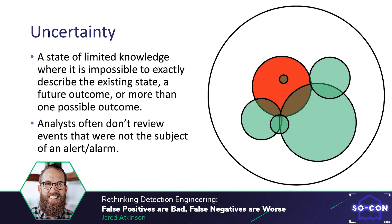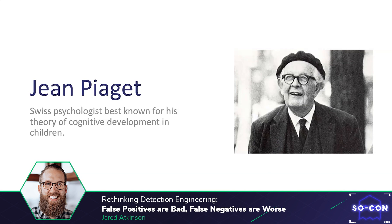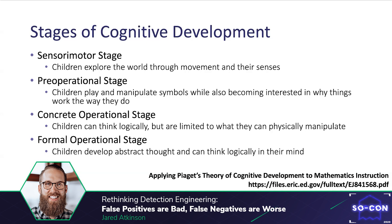While pondering how to solve the inherent uncertainty in detection work, I was introduced to a famous psychologist named Jean Piaget. Piaget is best known for his theory on childhood cognitive development, where he posited that we aren't born with the innate ability to deal with abstract thought — instead we must learn this through stages of development. Piaget identified four stages of cognitive development from infancy to adulthood. The first stage — sensorimotor — is associated with newborns or infants, whose worldview is limited to what they can sense directly.